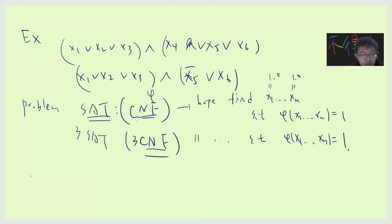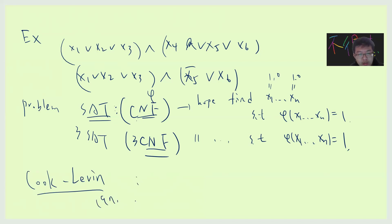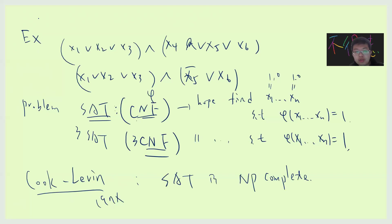This is called the satisfiability problem. The famous theorem is Cook-Levin — maybe I'll prove it in a future video — which proves that SAT is NP-complete. So our goal now is to prove that 3-SAT is also NP-complete. We want to do the reduction.